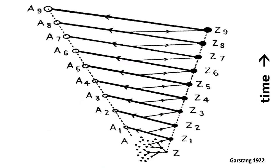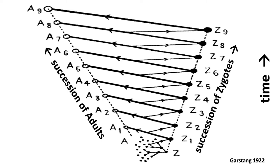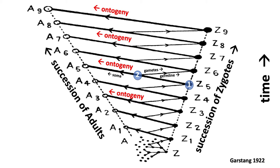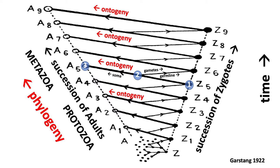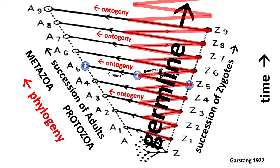Here's a diagram showing death in zygotes. Time goes up, with a succession of adults A1 through A7 — your great-grandparents, grandparents, parents, you, your children, your great-grandchildren, and so on. And there's a succession of zygotes Z1, Z2, Z3. Ontogeny is when you go from the zygote into an adult. You start as a zygote, evolve and get older, make gametes, your germline goes on, and the rest of you — the soma — turns into another adult and then dies. On the left we have the succession of adults, which you can understand as phylogeny, the evolution. But the germline is immortal — it zigzags up and keeps going and doesn't change very much.